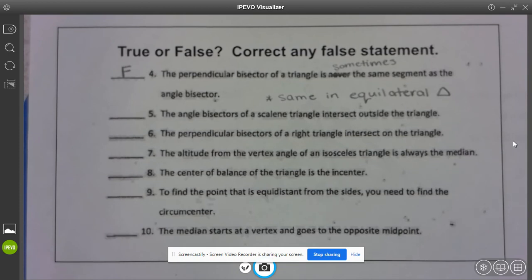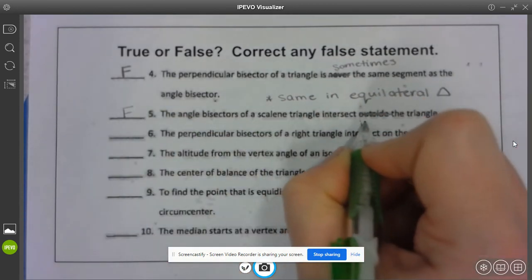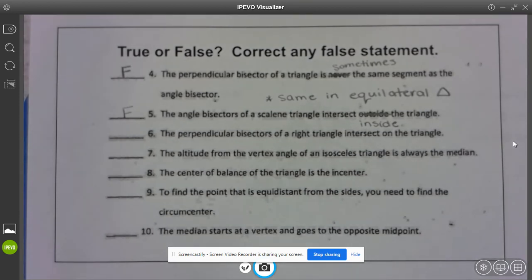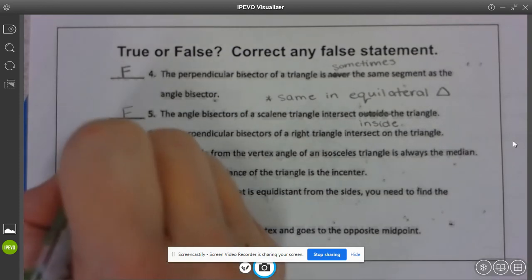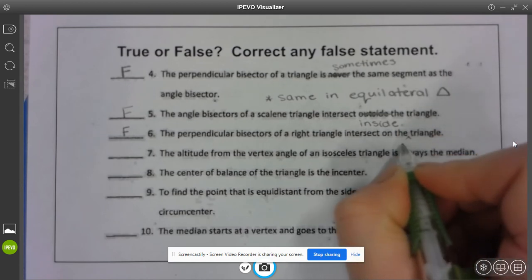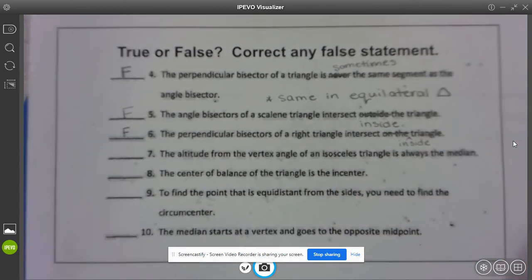Angle bisectors of a scalene triangle intersect, well we didn't look at anything intersecting outside the triangle so that's false, this is inside. Perpendicular bisectors of a right triangle intersect on the triangle, well that just doesn't make any sense. We should say inside not on the triangle but inside the triangle.